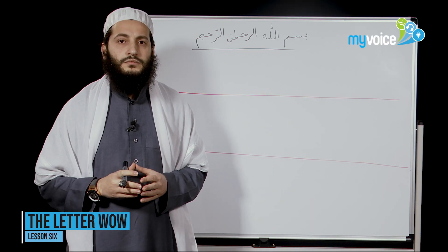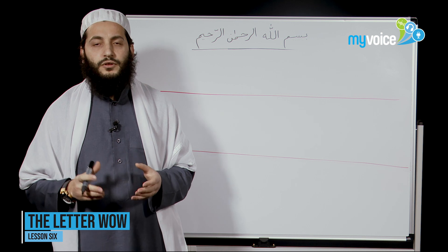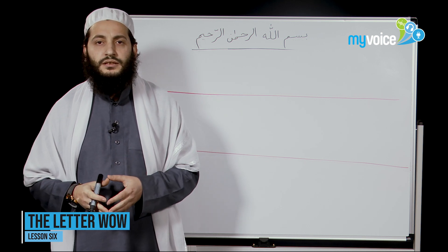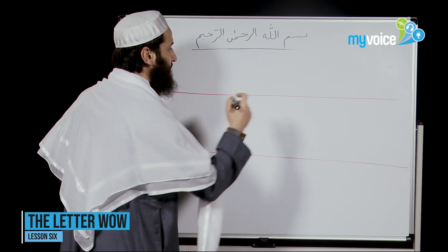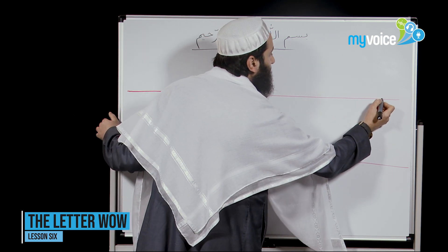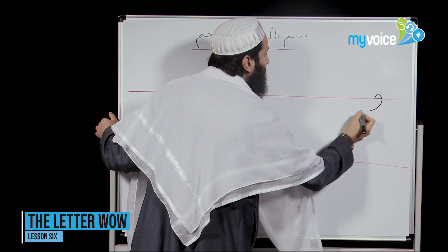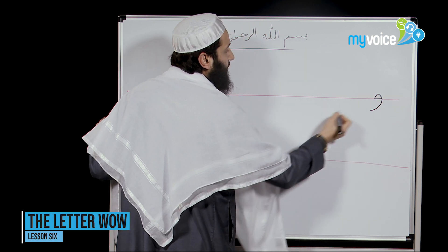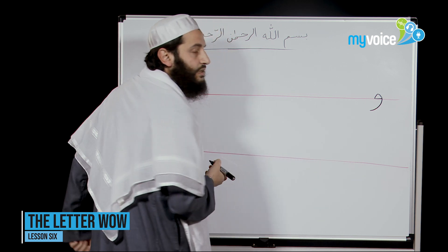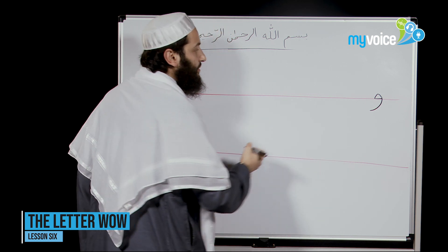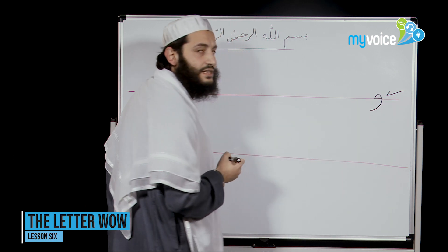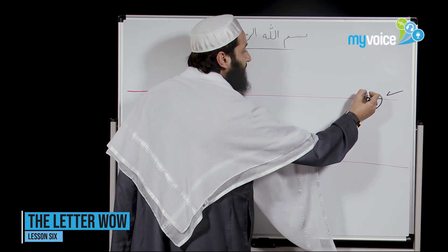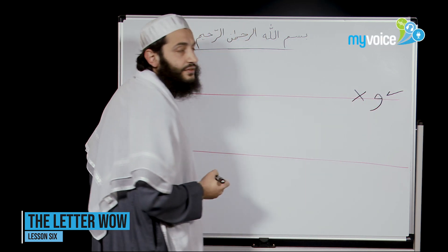Let's go now to the shape of WAW in the beginning, in the middle, and in the end of the word. The head is on the line and the body is under the line. WAW accepts the relation on the right side, but never accepts the relation on the left side.